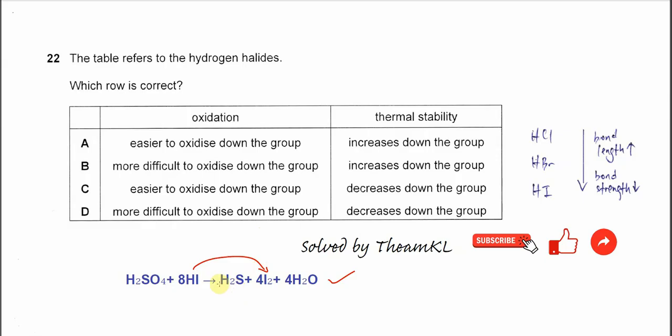So when down the group, it's easier to oxidize the hydrogen halides, and it can form different products. The HCl is not able to oxidize by the H2SO4.